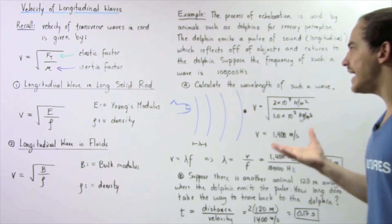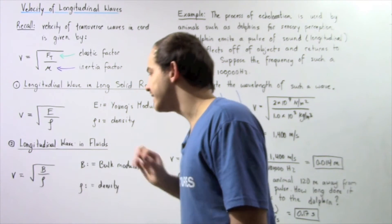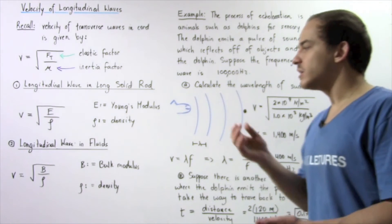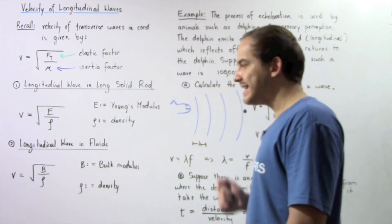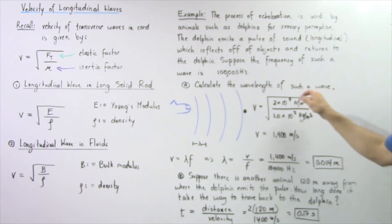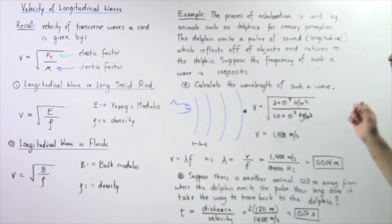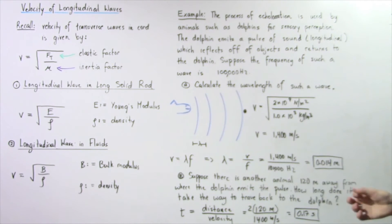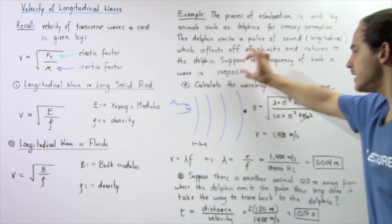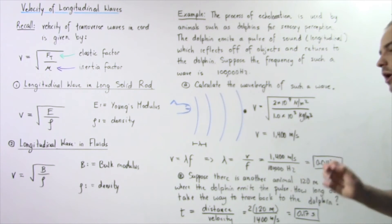Suppose the dolphin is swimming in pure water. We use the formula for longitudinal waves in a fluid: the velocity equals the square root of the bulk modulus of water, which is 2 × 10⁹ N/m², divided by the density of water, 1.0 × 10³ kg/m³. These values can be looked up in a textbook. Taking the square root gives a velocity of about 1,400 m/s. Dividing by the frequency gives a wavelength of 0.014 meters.